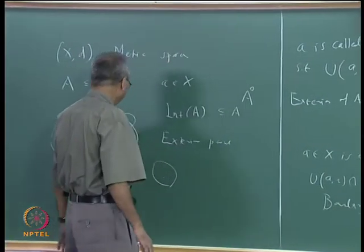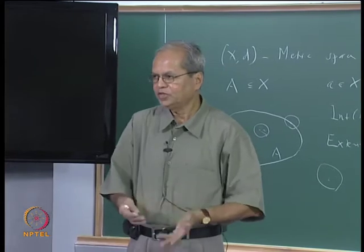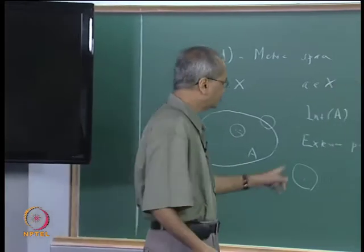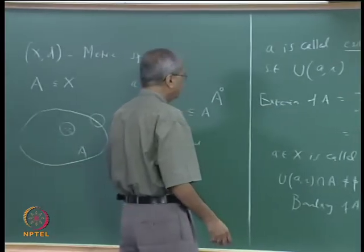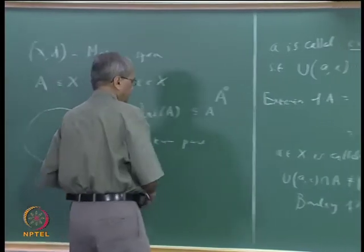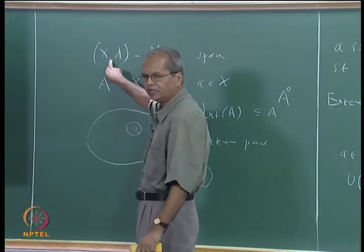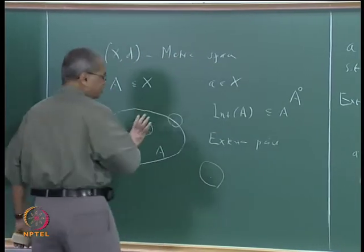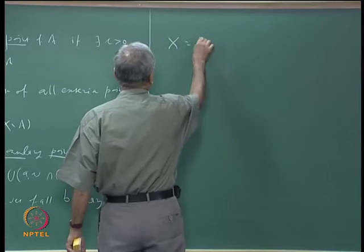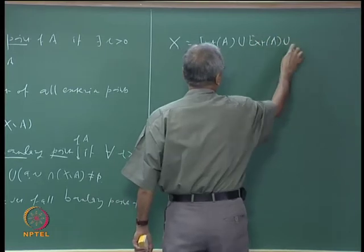Given any point in X, it should be either an interior point of A, an exterior point of A, or if both of these are false, it has to be a boundary point of A. It has to lie in one of these three sets. So X can always be written as a union of interior of A, exterior of A, and boundary of A.